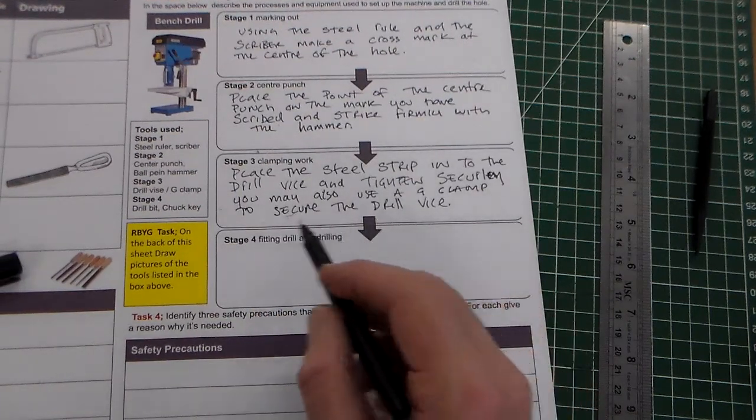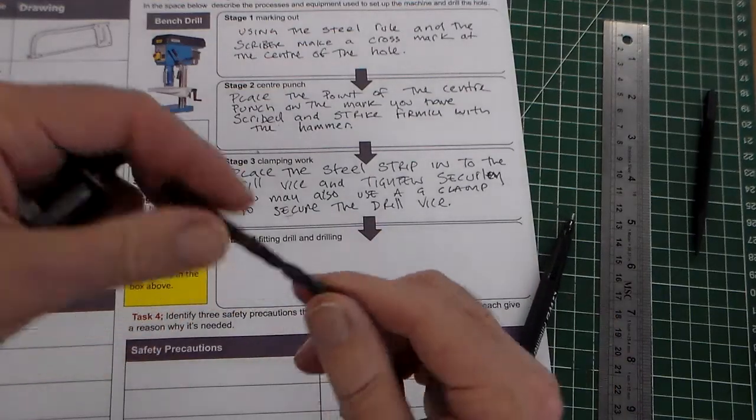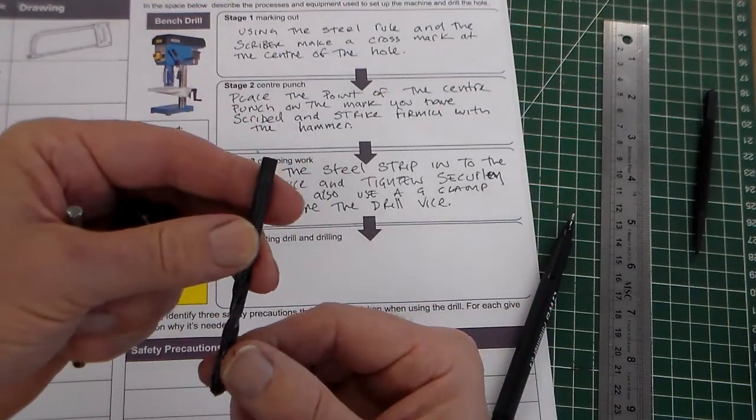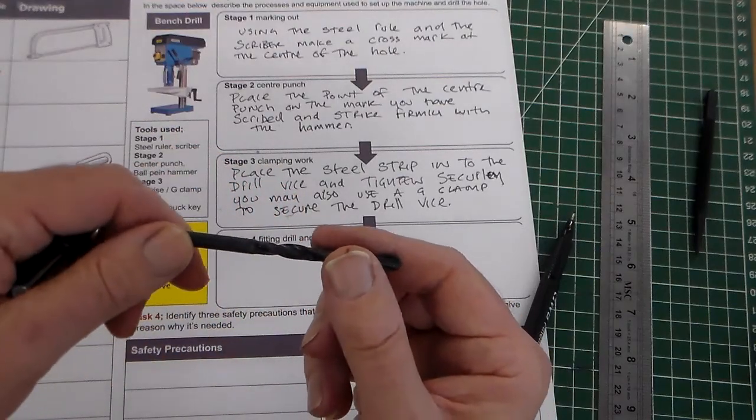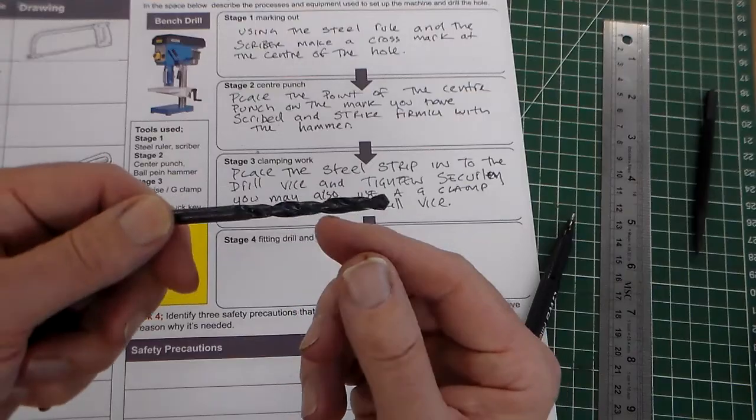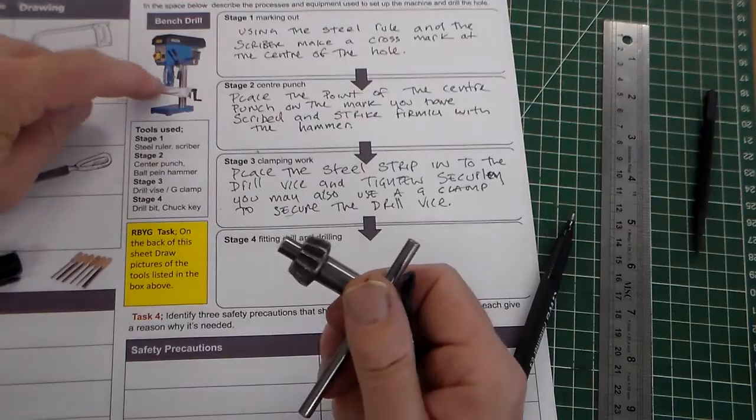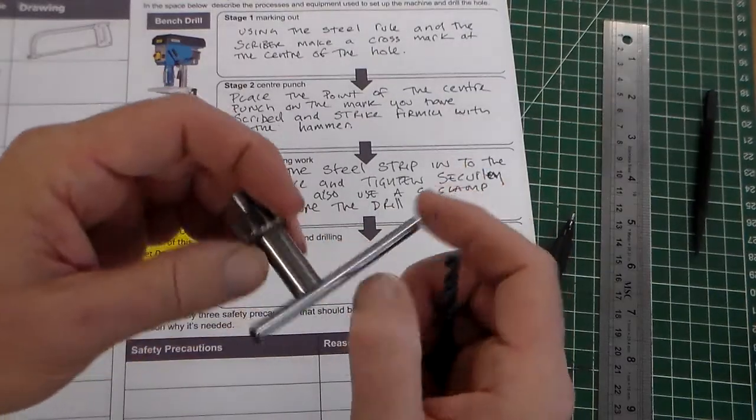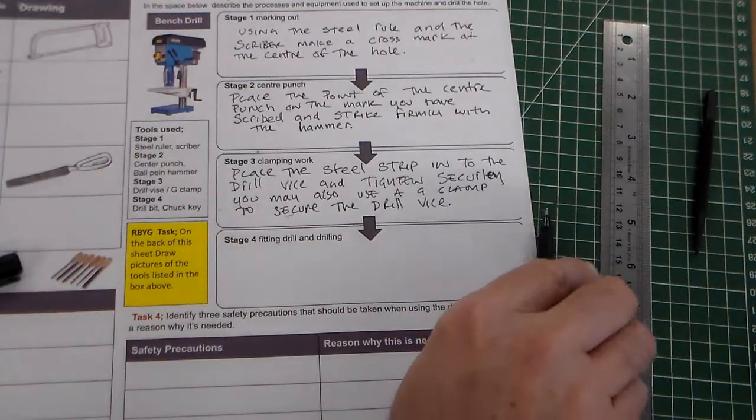And then we're on to stage four, fitting drill and drilling. Well, the tool bits, the two pieces of equipment there are the drill bit, which you looked at earlier. There's the drill bit. These are available in all kinds of sizes. I think this is the six millimetre one. We normally have six, six point five, seven, and so on. So it corresponds with the hole you want to drill. And there's the chuck key, which fits into the chuck on the pillar drill. We undo it, put the drill bit in, and tighten it up. Then we're ready to drill.